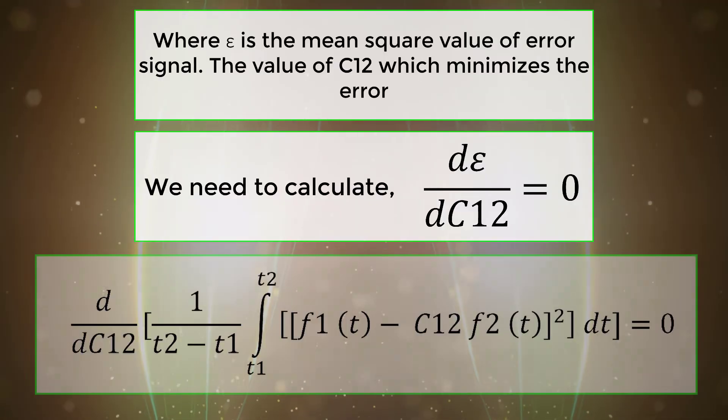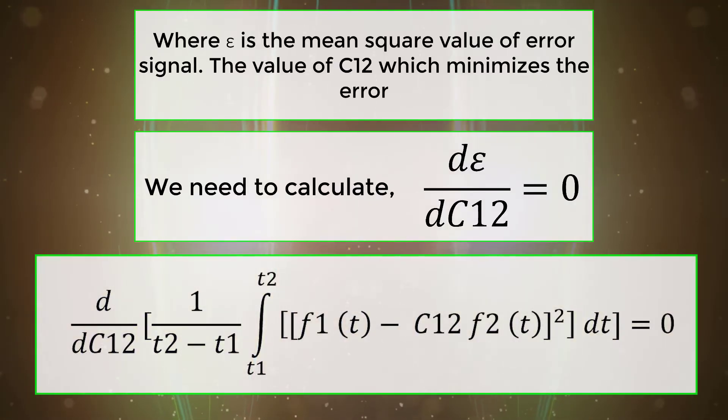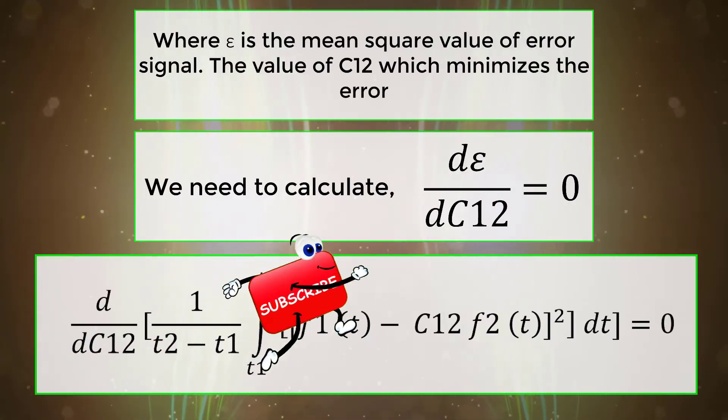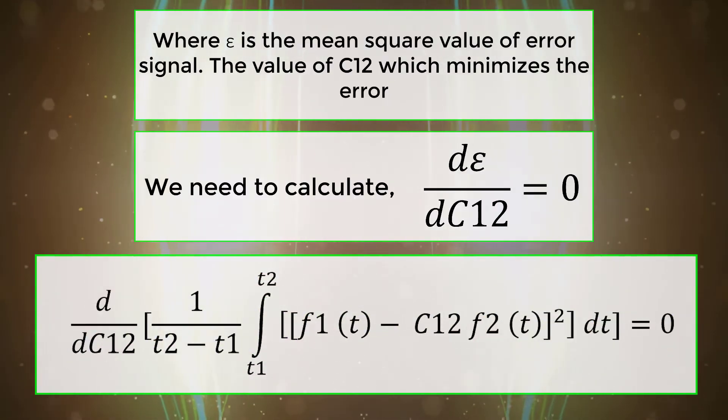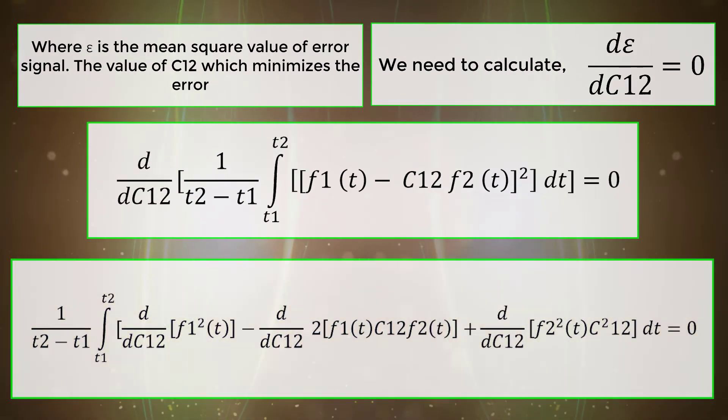d by dC12 of [1 by t2 minus t1 into integral t1 to t2 of [f1(t) minus C12 into f2(t)]^2 dt] equals zero.